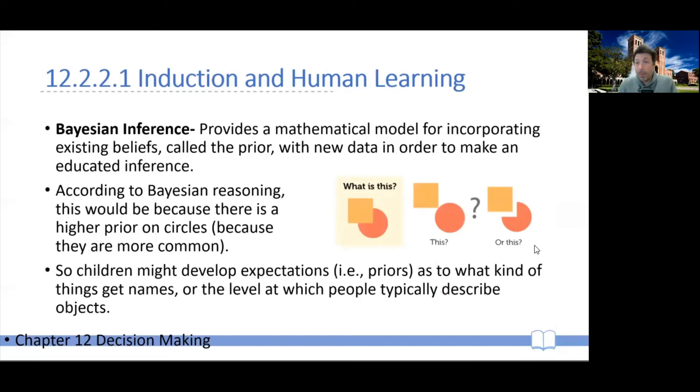Because again, circles are much more common. So this is what Bayesian inference is for. And so, the reason why this might be a successful way of explaining one-shot learning is that maybe children quickly develop expectations, which would be the priors, as to what kind of stuff gets names and at what level people typically refer to objects. And this kind of knowledge is what allows them to quickly learn in this kind of one-shot learning.